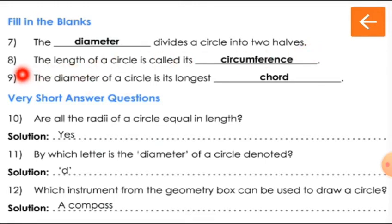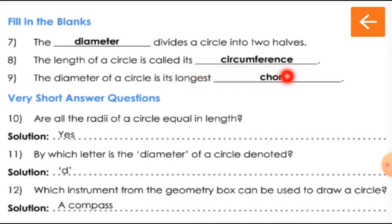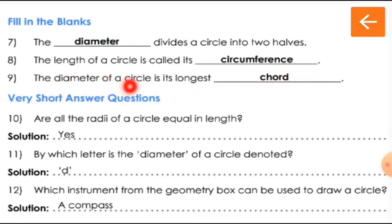Question number 8: The length of a circle is called its circumference. Now next: The diameter of a circle is its longest dash. The diameter of a circle is its longest chord. Diameter is the longest chord in a circle, so the answer is chord.